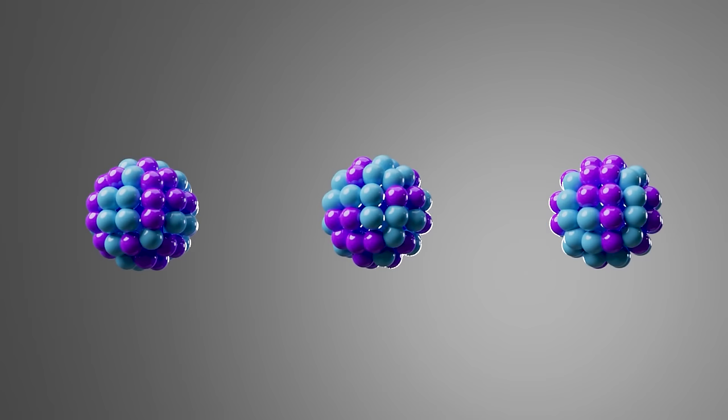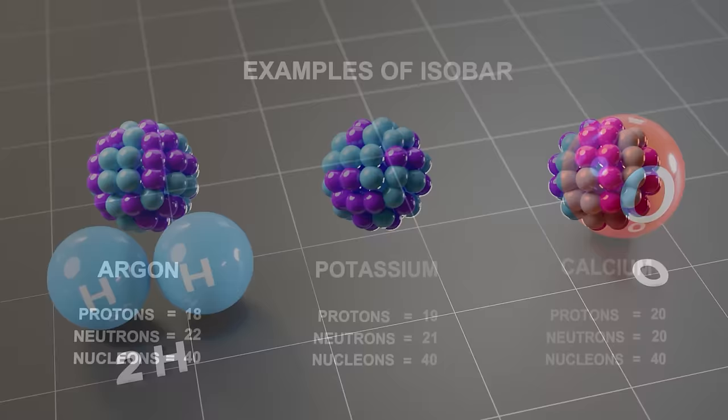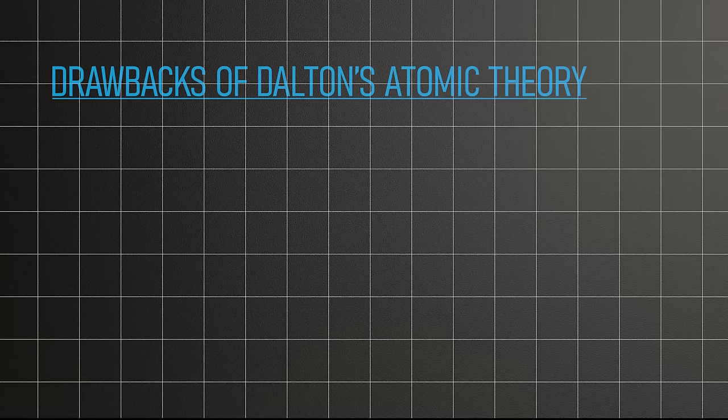Later this was also proven wrong because of the existence of isobars. Isobars are atoms of different chemical elements that have the same number of nucleons. According to Dalton, atoms combine in whole number ratios to form stable compounds. Dalton's atomic theory, despite its limitations, remains a great achievement and we must appreciate Dalton's work.